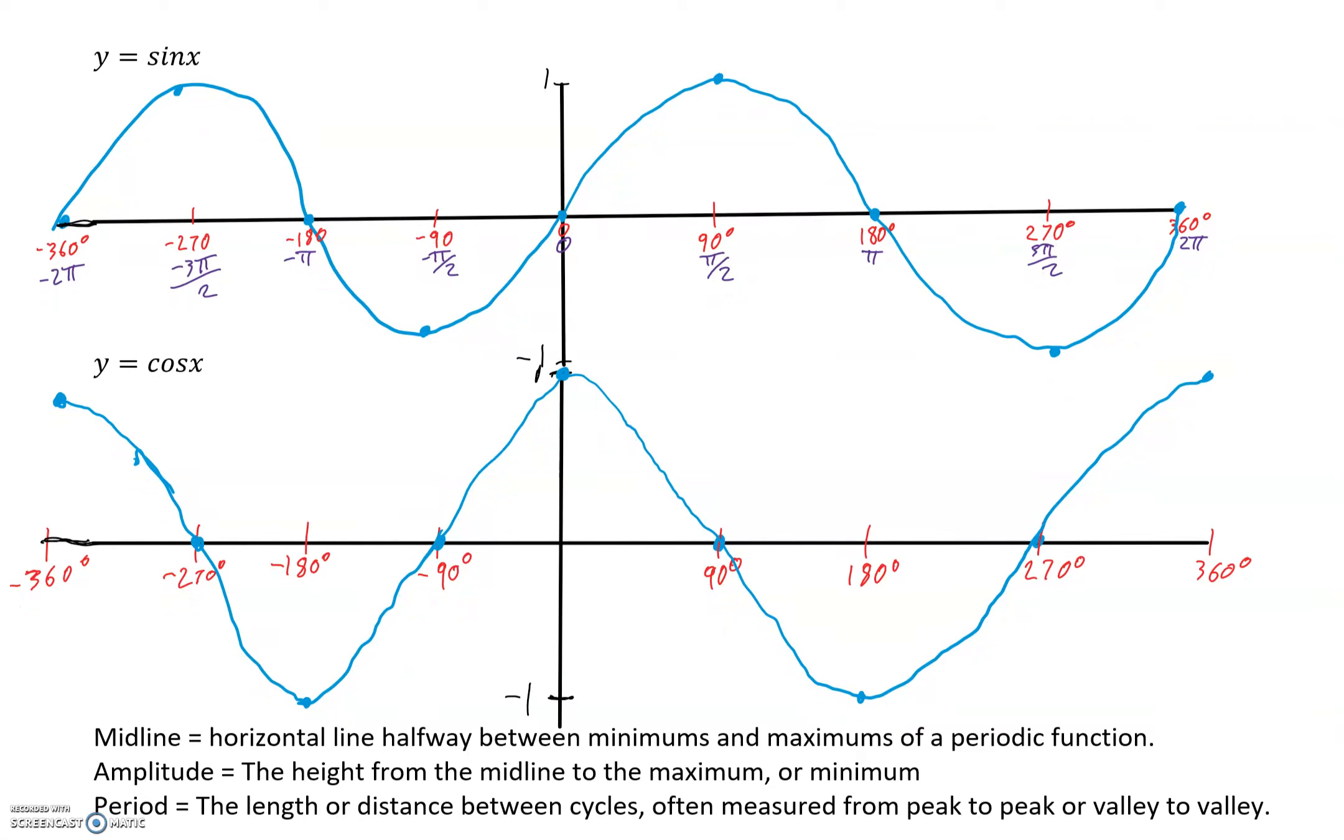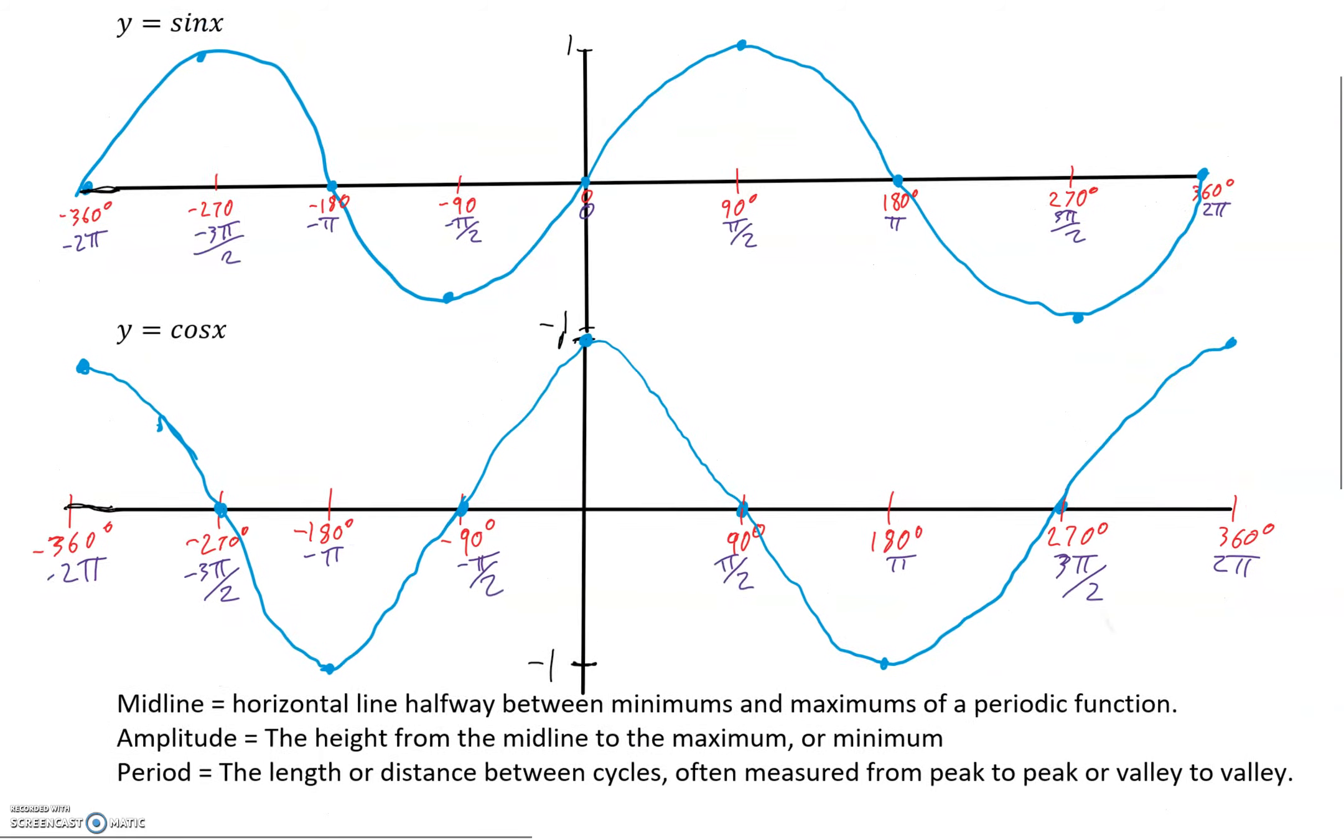Now, if we again do the same sort of thing with radians, it would be π/2, it would be π, it would be 3π/2, it would be 2π. And then it would be into the negative. So negative 2π, negative 3π/2, negative π, and negative π/2.